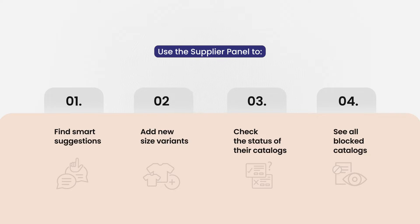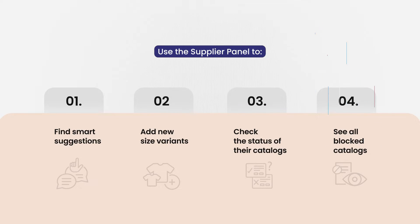Sellers can now find smart suggestions about their inventory, add new size variants to their catalogs with a single click, check the status of their quality checked catalogs, and find blocked catalogs all in one place.